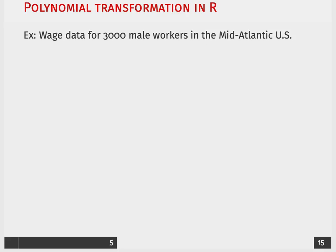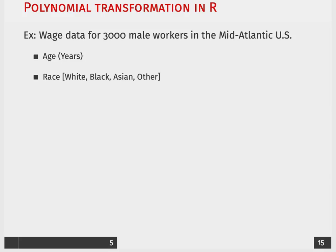Now, for our example, we're going to work with data of 3,000 male workers in the Mid-Atlantic and looking at their wage. As predictors, we have their age in years, and their race: white, black, Asian, and other.